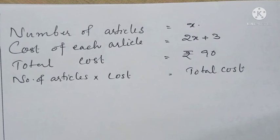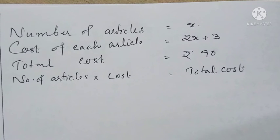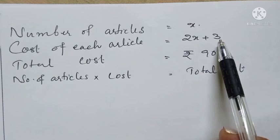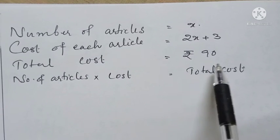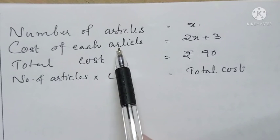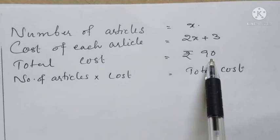In our question, we have to find the number of articles produced and the cost of each article. Therefore, we are taking the number of articles equal to x. It is given that the cost of production of each article is three more than twice the number of articles. Twice the number of articles is equal to 2x, and three more than means we add 3, giving us 2x plus 3.